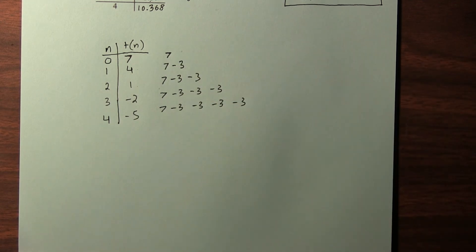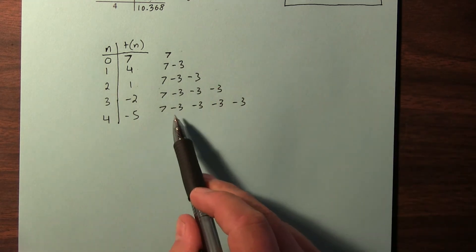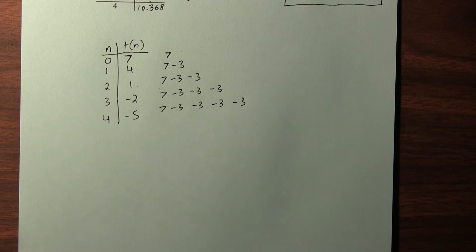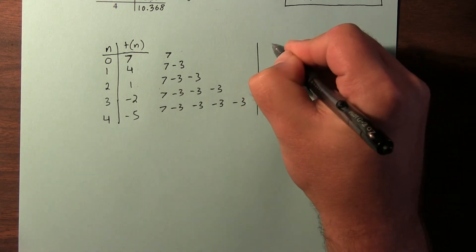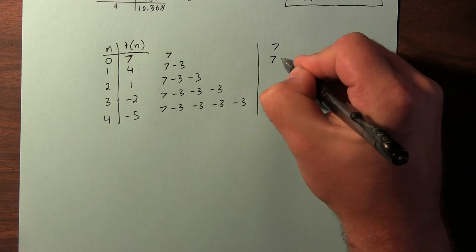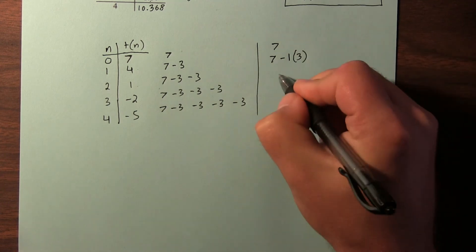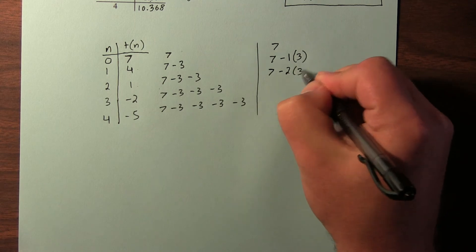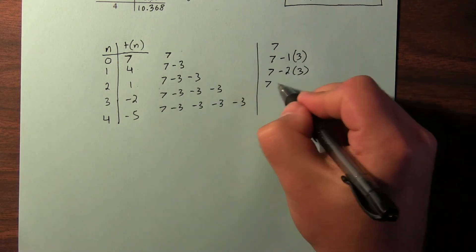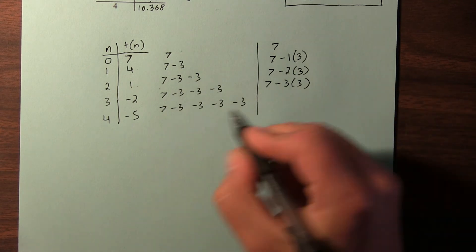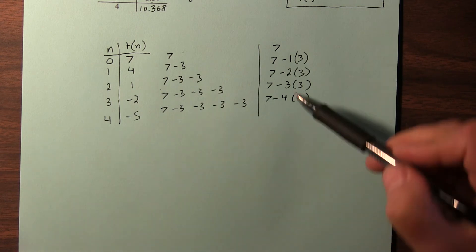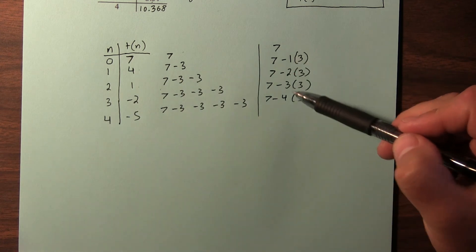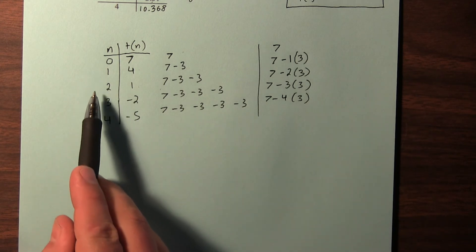Now I'm going to simplify this. When you have repeated subtraction or repeated addition, you could represent that as multiplication. So this right here is 7. This is 7 minus 1 times 3. This is 7 minus 2 times 3, because we have 1, 2. This is 7 minus 3 times 3, and this is 7 minus 4 times 3. Now there's something interesting here. Do you notice this 1, 2, 3, 4 corresponds with the term numbers? 1, 2, 3, 4.